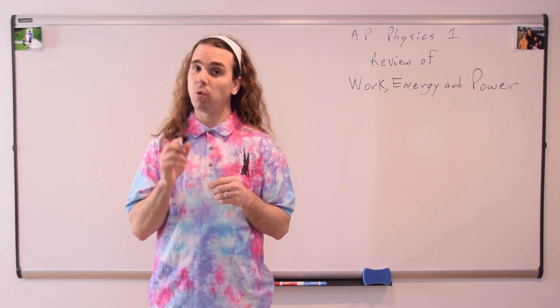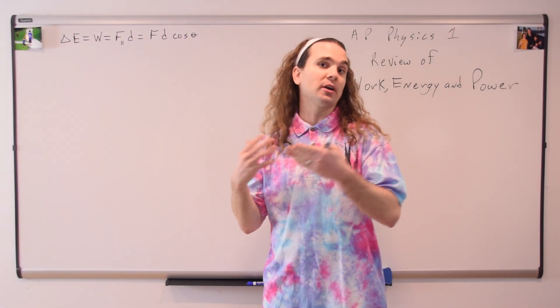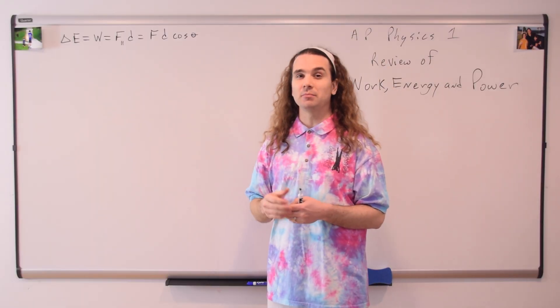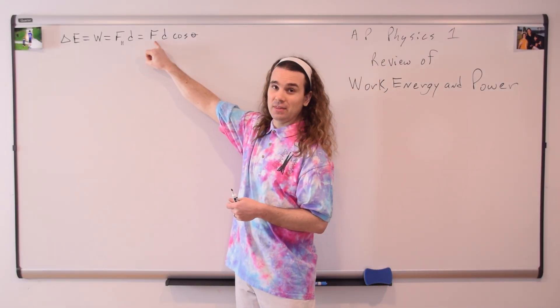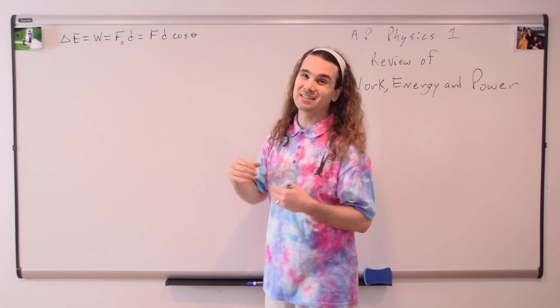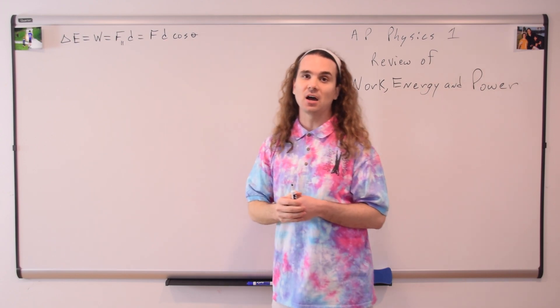From the equation sheet, in terms of an object or a group of objects, which we call the system, the change in energy of the system equals the work done on the system, which is equal to the force doing that work times the displacement of the object times the cosine of theta, where theta is the angle between the direction of the force and the direction of the displacement of the object.